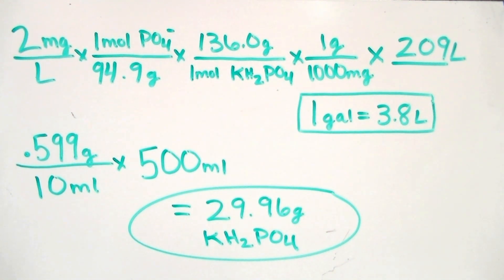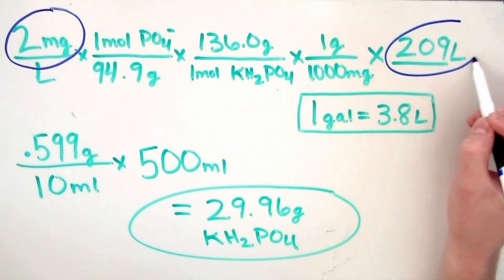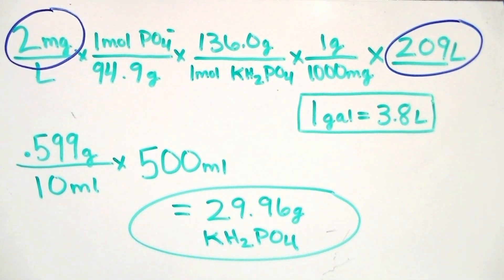Now, let's go over a few of the numbers in this calculation, which are subject to change. The first number we can alter is our desired concentration. We're going to recommend sticking with 2 milligrams per liter, or even 1 milligram per liter, because overdosing phosphate can easily cause an algae bloom. The next number that's subject to change is the volume of the aquarium you're dosing. To find out how many liters your tank is, simply take the volume in gallons and multiply it by 3.8.